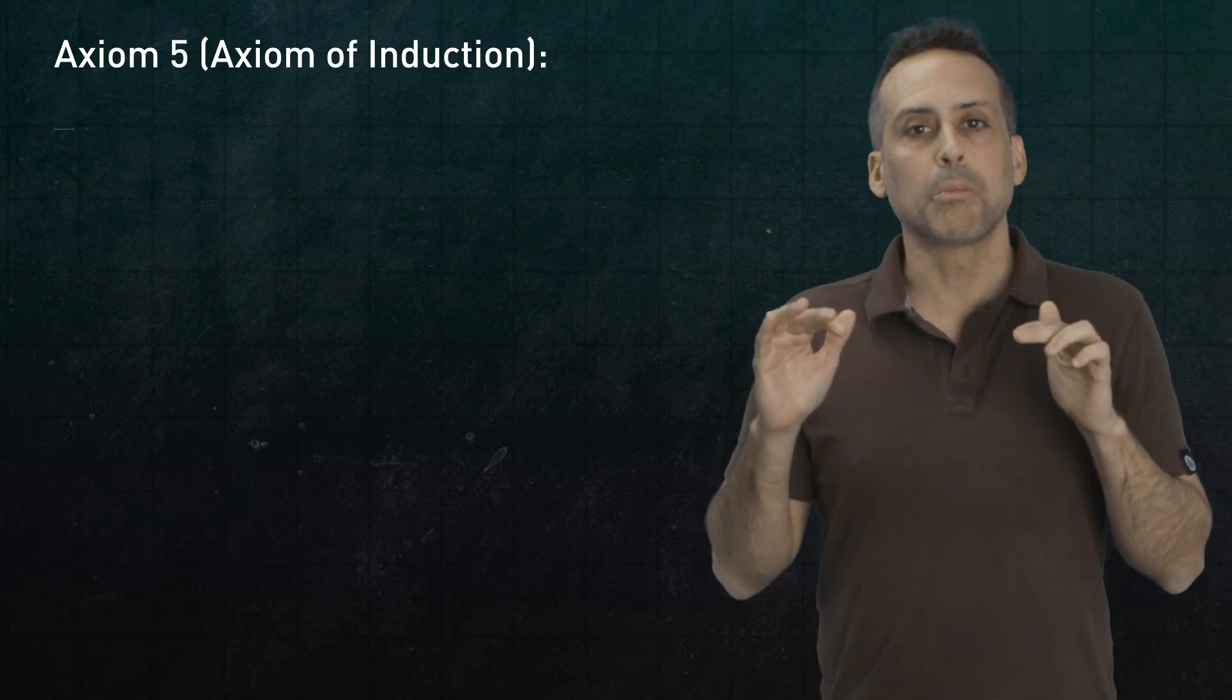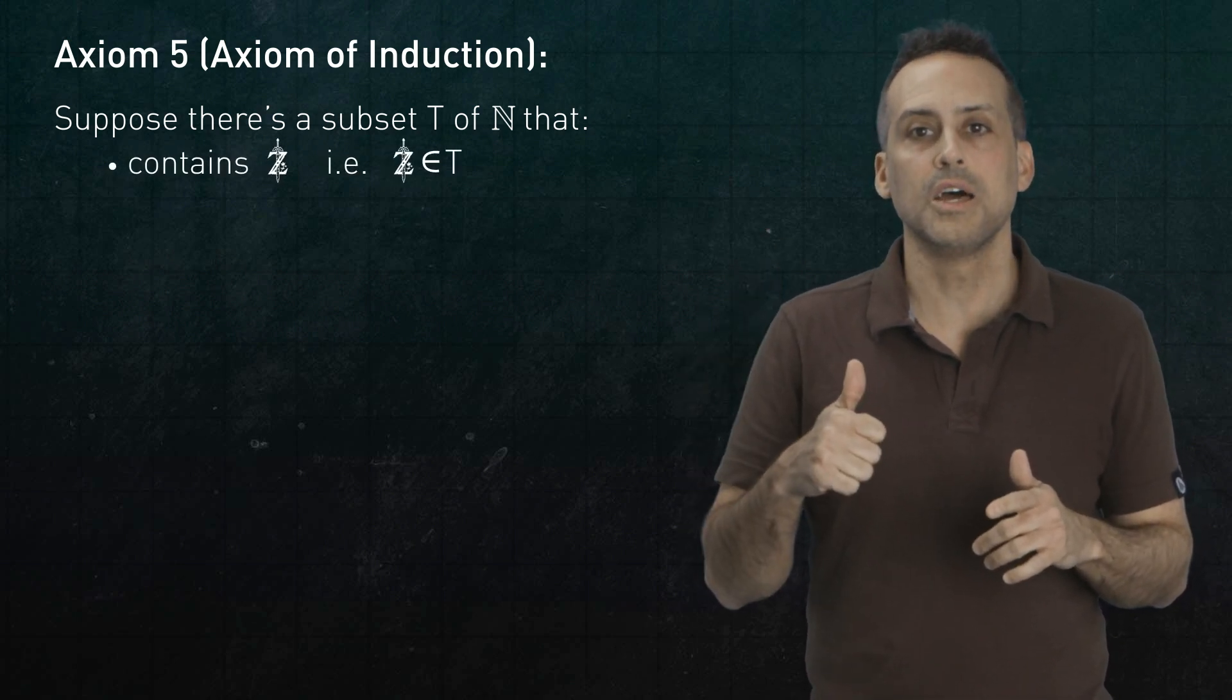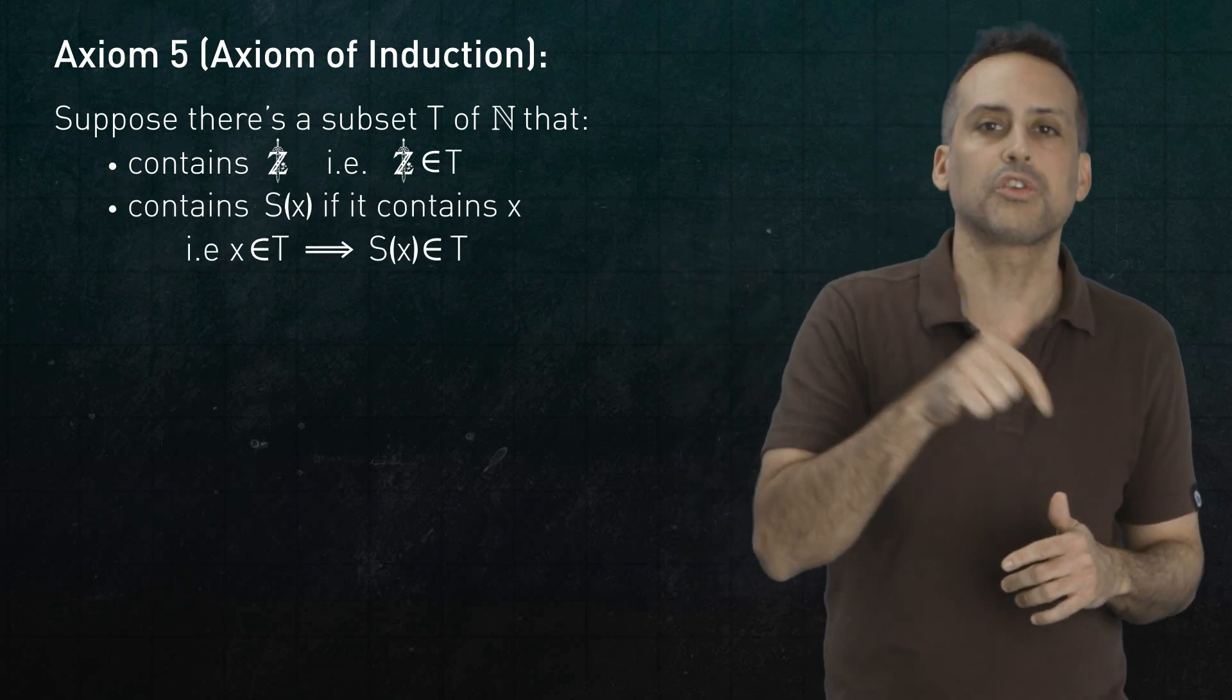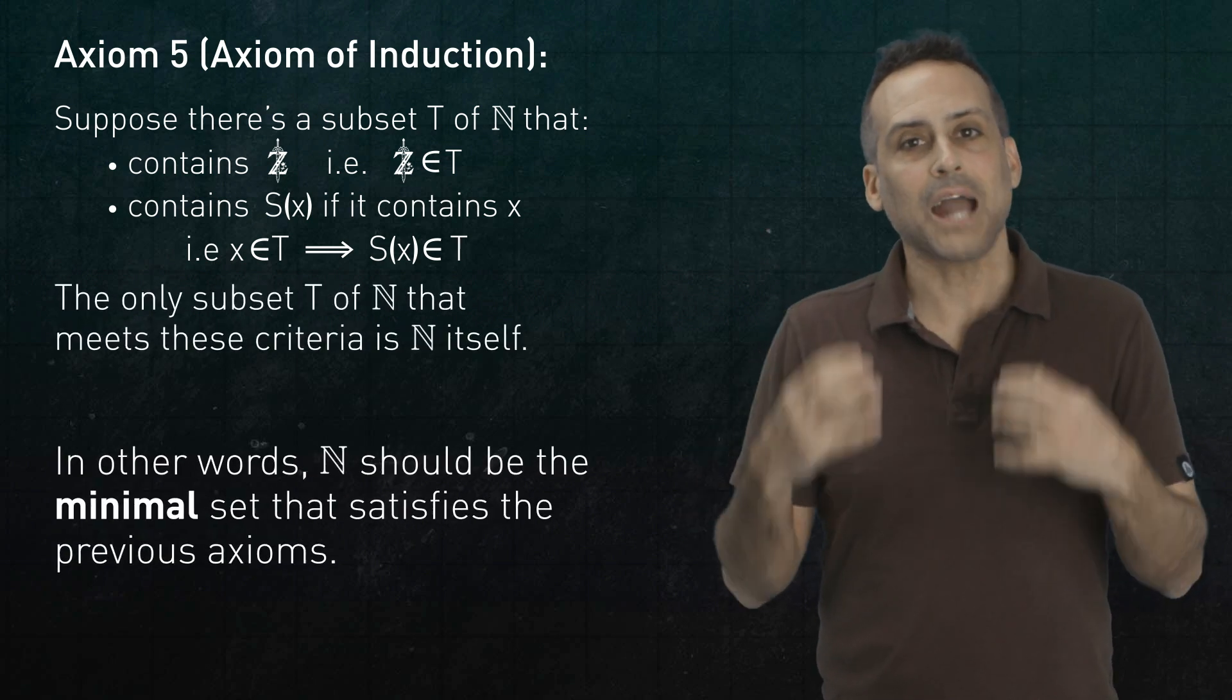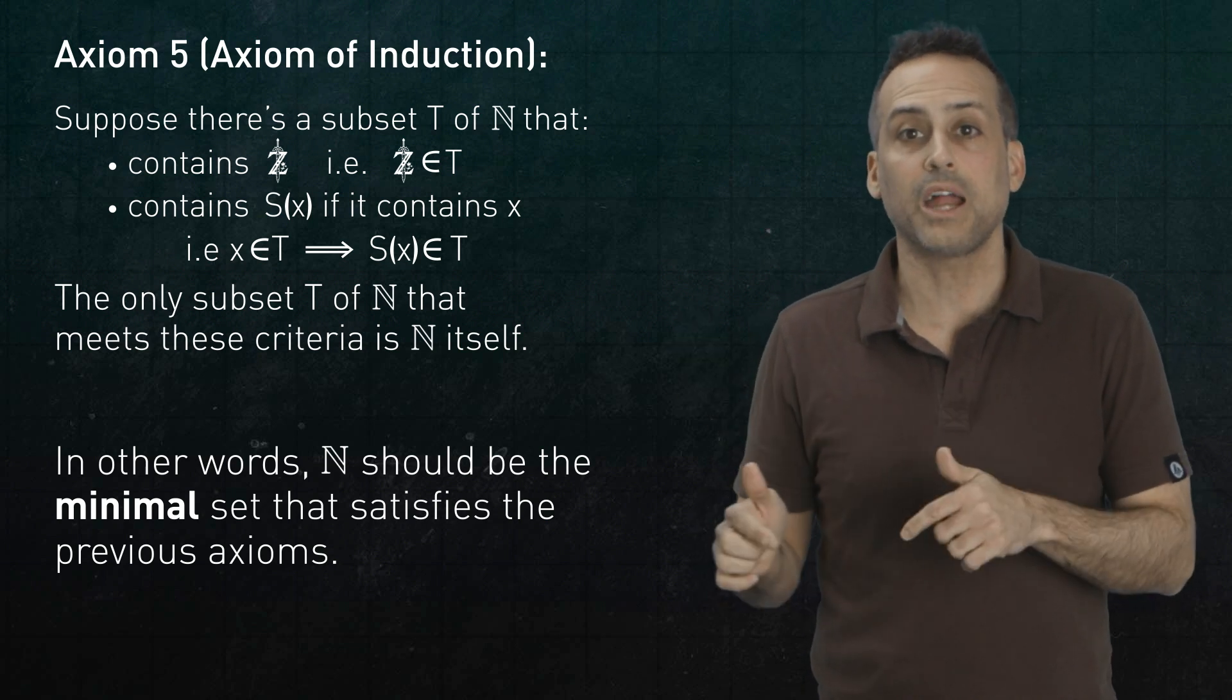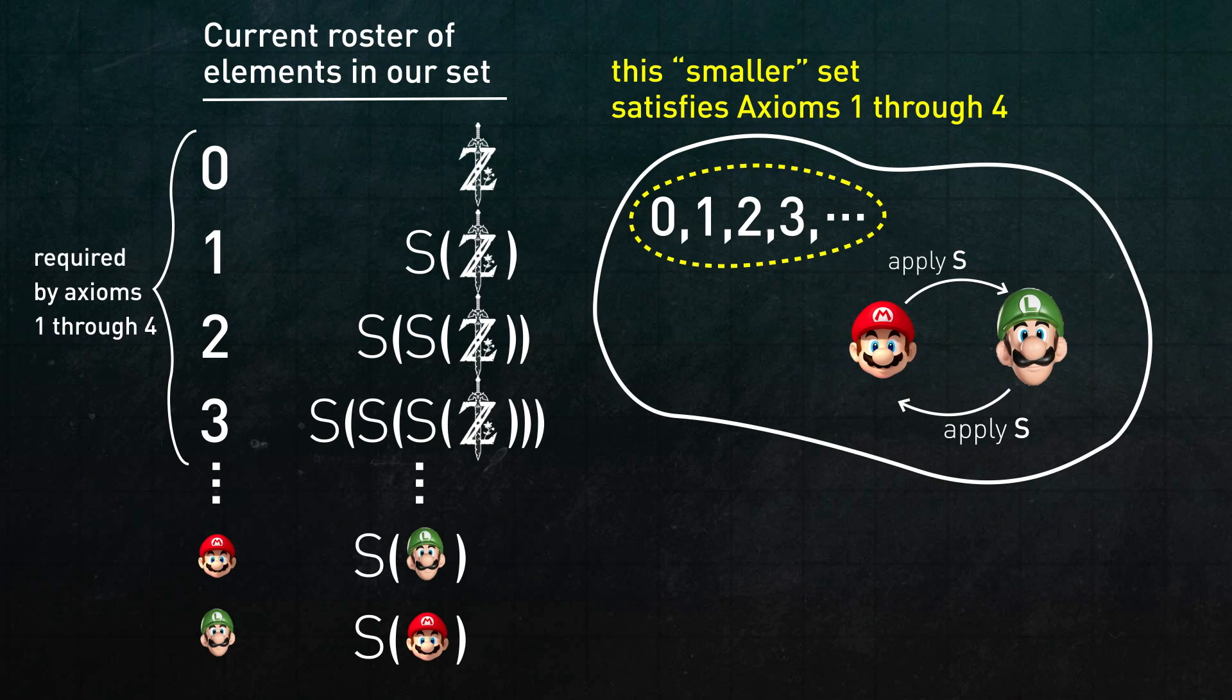Here's axiom 5. Suppose that t is any subset of n that satisfies two properties. First, that Zelda is in t, and second, that if x is in t, then s of x is also in t. Then, by declaration, t is the set n. In other words, axiom 5 declares n to be the minimal set that will satisfy axioms 1 through 4. Now, since the infinite chain we already have fits that bill by axiom 5, that set is n. We are done.